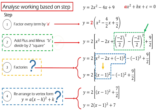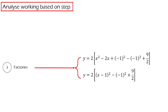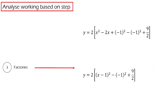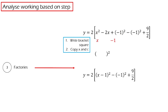Now we have completed the second step. Let's move on to the third step, which is factorize. How do we factorize? It's very simple — we write the bracket squared, and then we just copy the x and the constant. And now we have completed the third step. If you wonder why we are able to do that and what the principle behind it is, please click the video below explaining this principle.